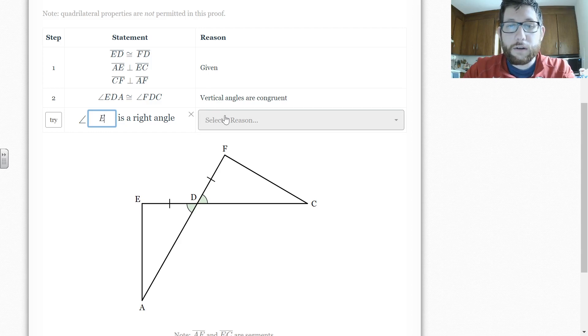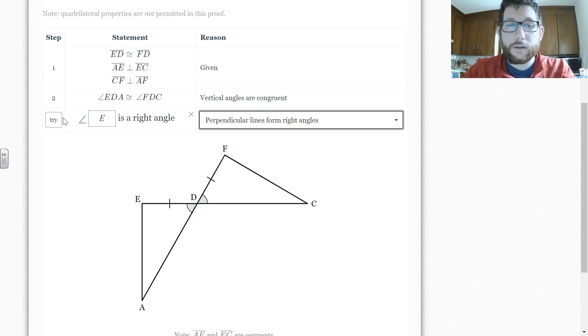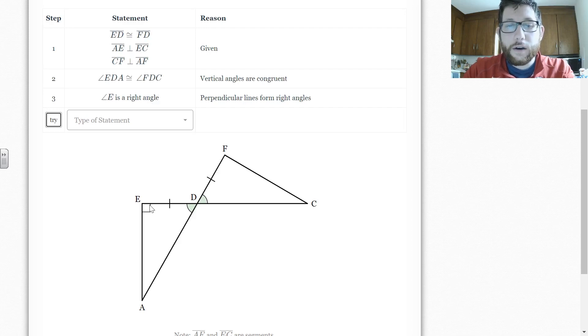So angle E is a right angle. Why do I know that? Well, I know perpendicular lines form right angles. So I try it out. All right. Notice how it puts a perpendicular or a 90 degree angle here.